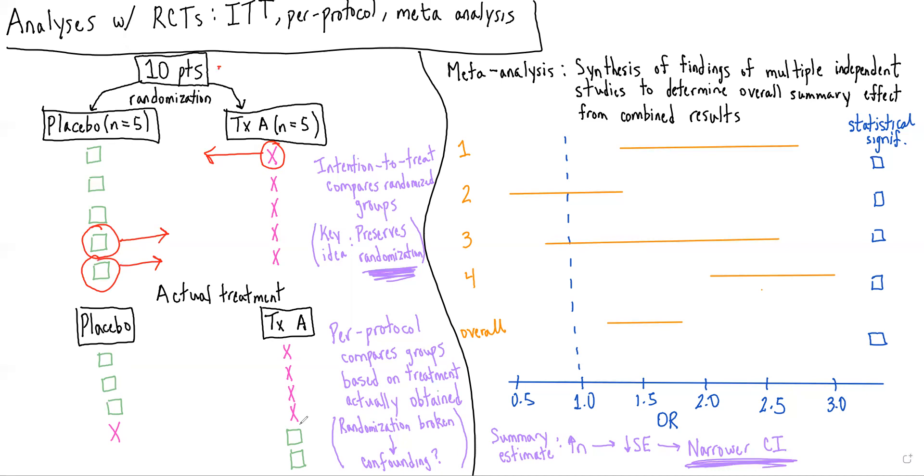So we're really faced with this conundrum of how do we analyze the data? Do we analyze it based on how the patients were actually randomized, or do we analyze the data based on what treatment they actually received? And this really gets at the question between the type of analysis.